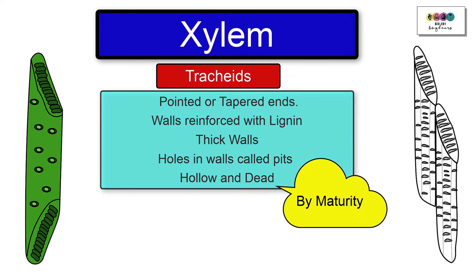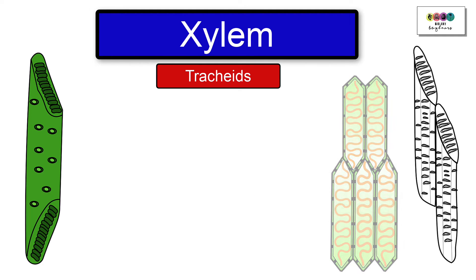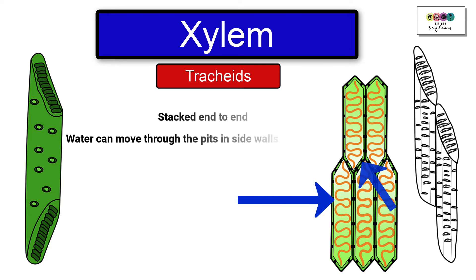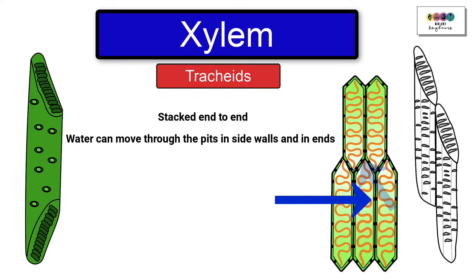All xylem is dead. The tracheids will be stacked on top of each other and side by side, and you can see that the water can move inwards through the pits from tracheids to tracheids, and also through those end pits as well.